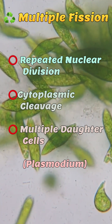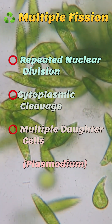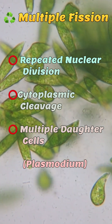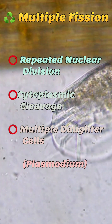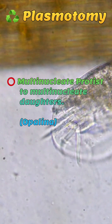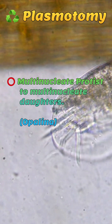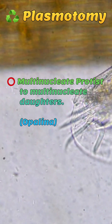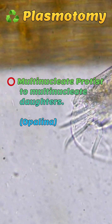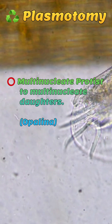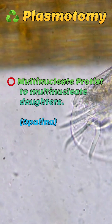In multiple fission, a parent produces a number of daughters due to repeated division of the nucleus and cytoplasmic cleavage. A classic example of multiple fission is Plasmodium.